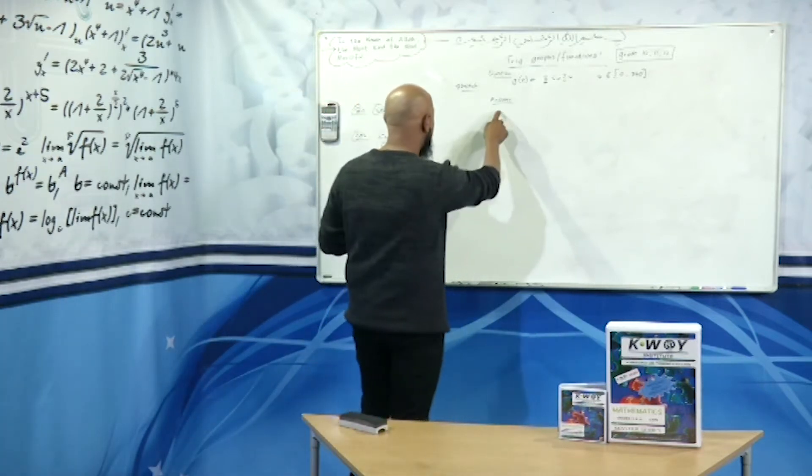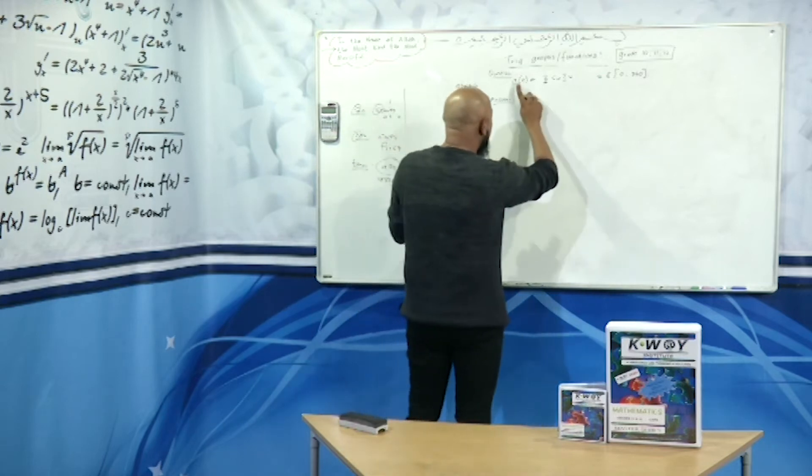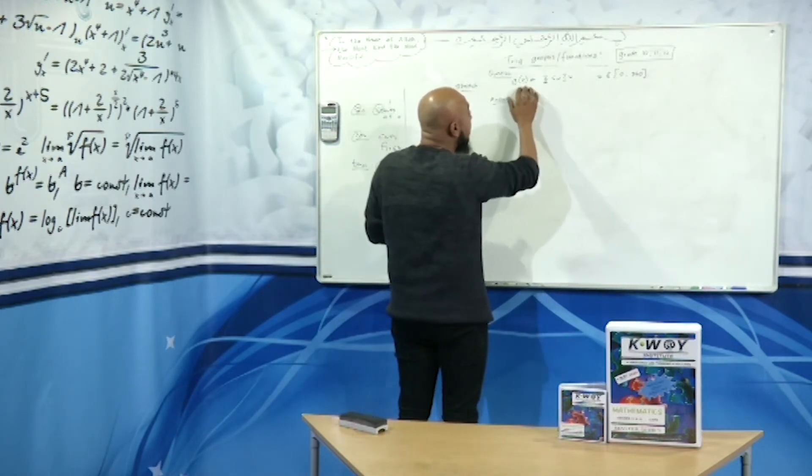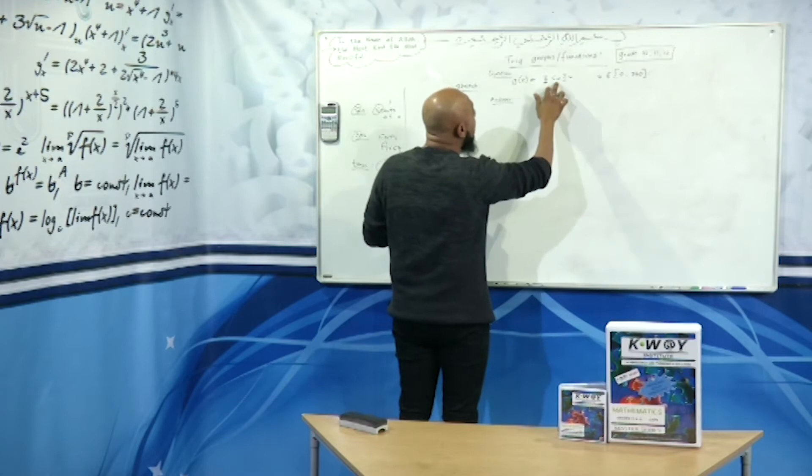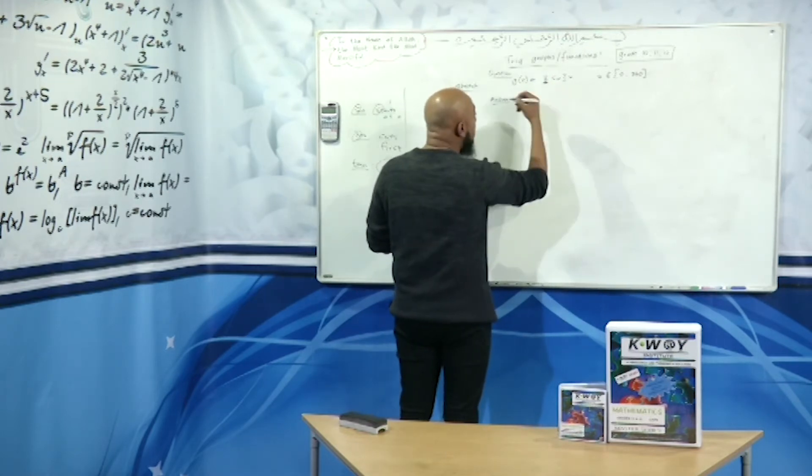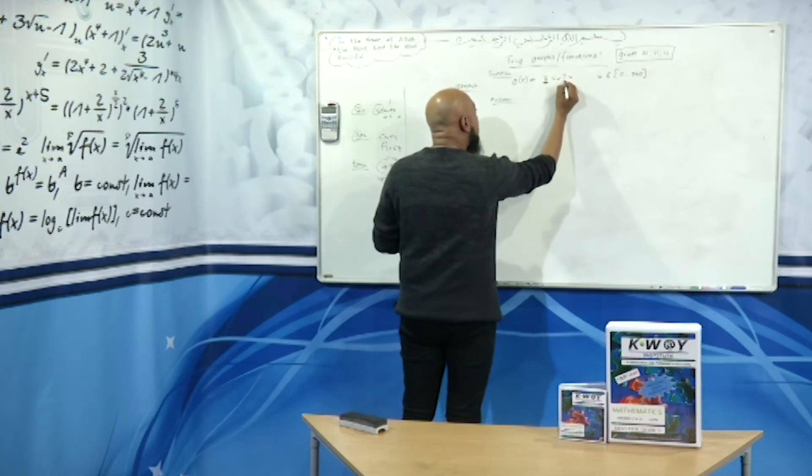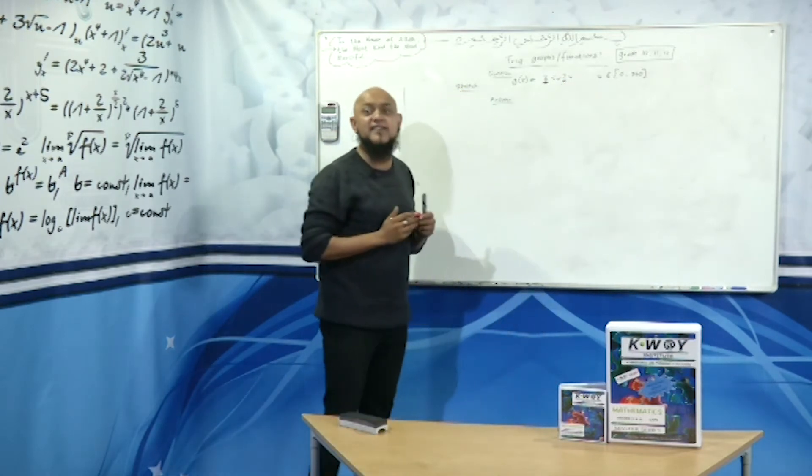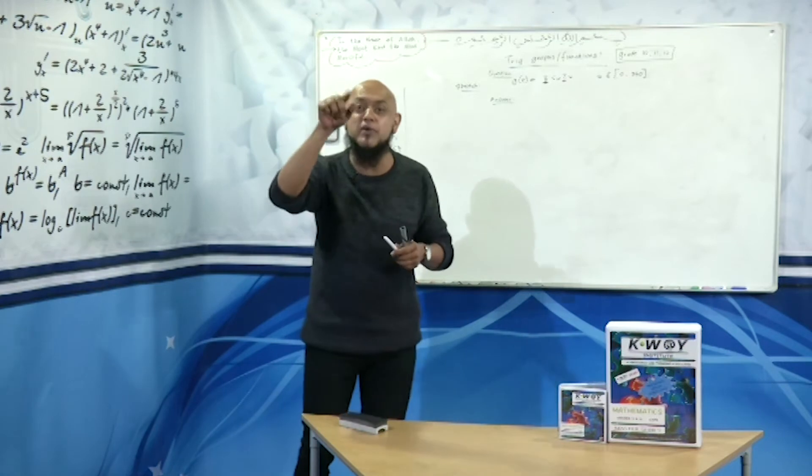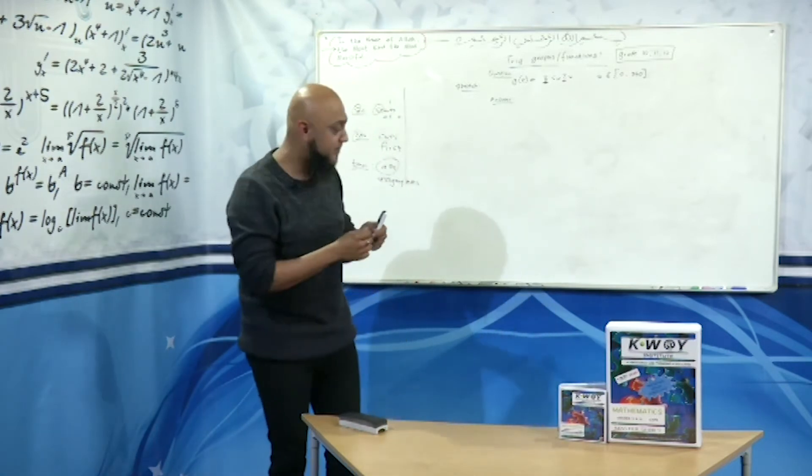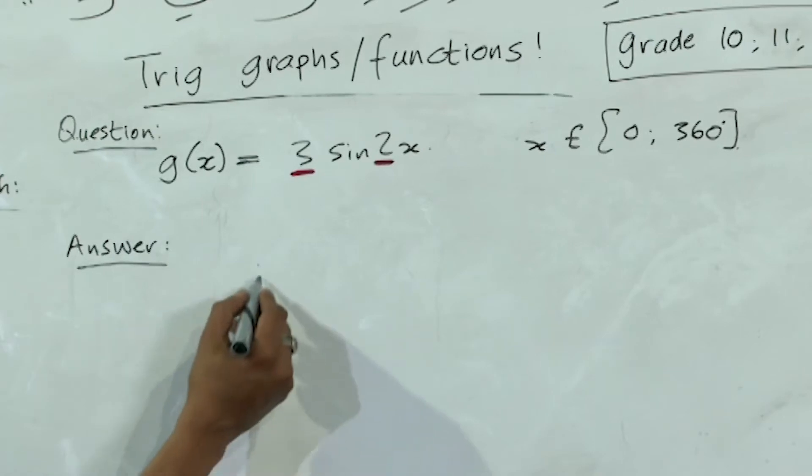So let's get started. We said G of X is equal to - I want you now to write this equation down - G of X is equal to 3 sine 2X. Now there's a difference. It is still the same as what we had before, but now we've got a number here in between. In the previous examples they were behaved, so the number was one, very easy. Right? So now things have changed.